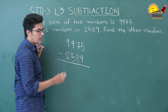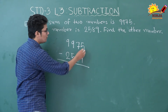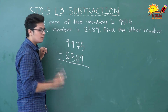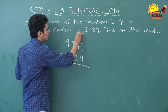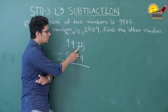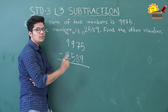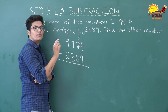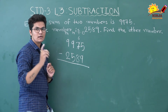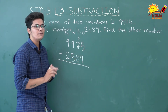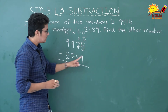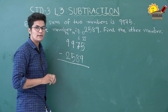Let's find the difference: 9975 minus 2589. Starting from ones place: 5 minus 9 — since 5 is less than 9, we cannot subtract. So we will borrow one 10 from the tens column. The tens column has 7 tens; after borrowing one, there are 6 tens left. We use that 10 in the ones place: one 10 equals 10 ones, and there are already 5 ones, so now we have 15 ones. Now 15 minus 9 is 6.